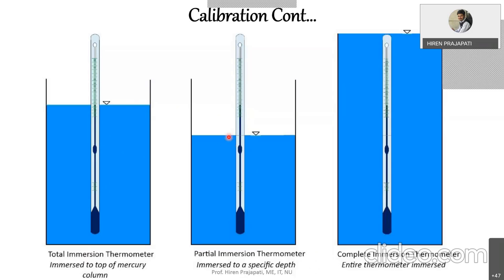For partial immersion, there is a reference line marked on the thermometer. When calibrating, the thermometer was kept inserted up to that reference line in the reference medium. Whenever you use this thermometer, you need to dip it up to that marking. Complete immersion means the entire glass stem up to the expansion chamber must be submerged within the medium for temperature measurement.